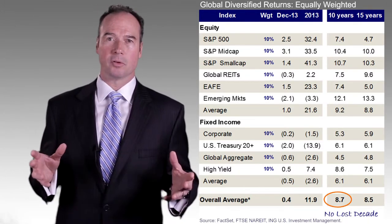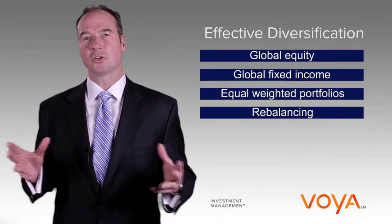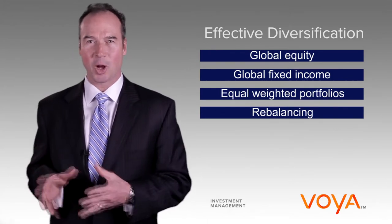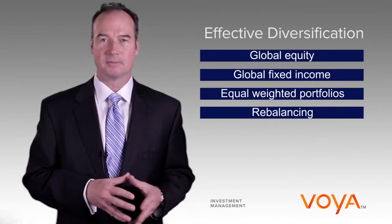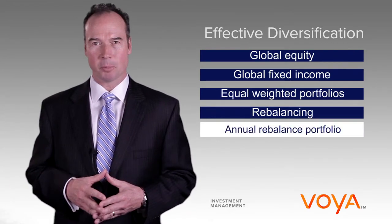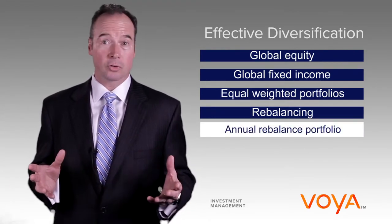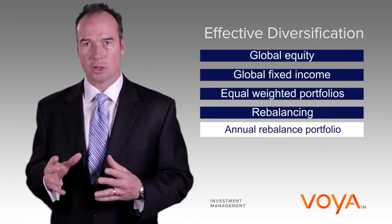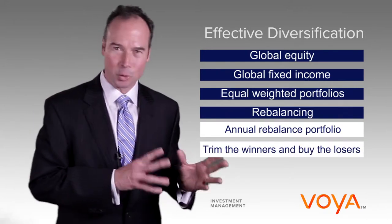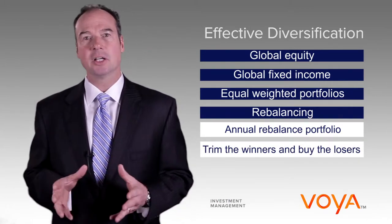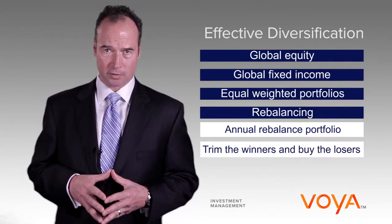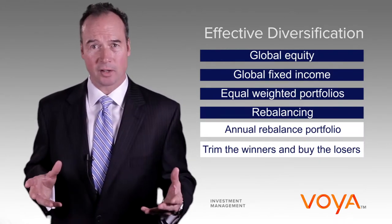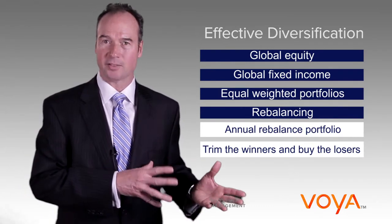The final principle is rebalancing, which institutionalizes the classic investment discipline of buy low and sell high. Annually is a great time to rebalance a portfolio, but it can also be done more frequently. The point is to regularly trim the winners and buy the losers. Given 2013 performance, an appropriate rebalance now would involve trimming U.S. equities and buying emerging market stocks.